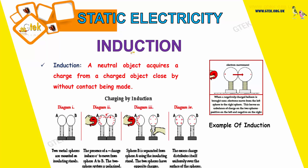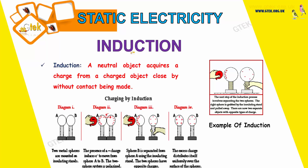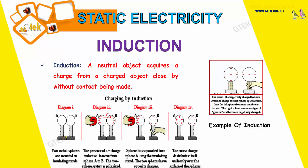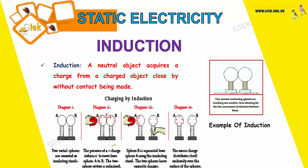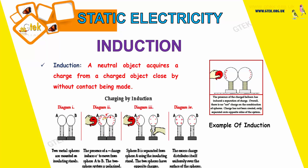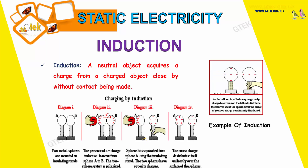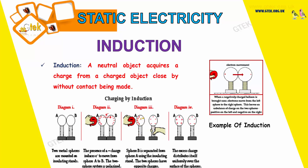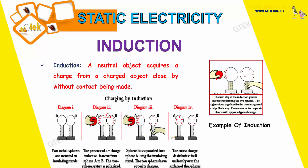Now we shall see about induction. Induction is when a neutral object acquires a charge from a charged object which is close by, without contact being made. At first we have two metal spheres mounted on an insulating stand. The presence of a negative charge induces the electrons to move from sphere A to sphere B. The two-sphere system is now polarized. Sphere B is then separated from sphere A using the insulating stand. The two spheres have opposite charges — sphere A is positively charged and sphere B is negatively charged. The excess charge distributes itself uniformly over the surface of each sphere.